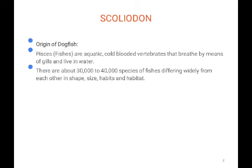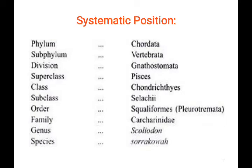It belongs to the super class Pisces. We have learned many classification levels: super class, then class. There are two sub-classes: Elasmobranchi and Osteichthyes. These are cold-blooded vertebrates; they breathe by means of gills and they live in water. There are a lot of different varieties of shark.